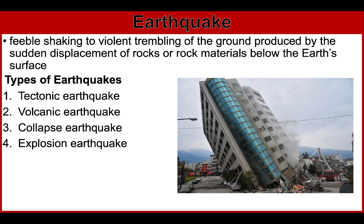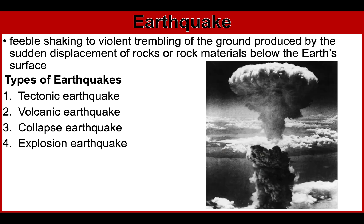Collapse earthquakes are also called mine bursts. They are generally smaller and most commonly occur near underground mines, and are instigated by the pressure generated within the rocks. Lastly, explosion earthquakes are caused by nuclear explosions — they are essentially the only man-triggered kind of earthquakes. The nuclear attack on Hiroshima is one example. This video will focus on tectonic earthquakes.